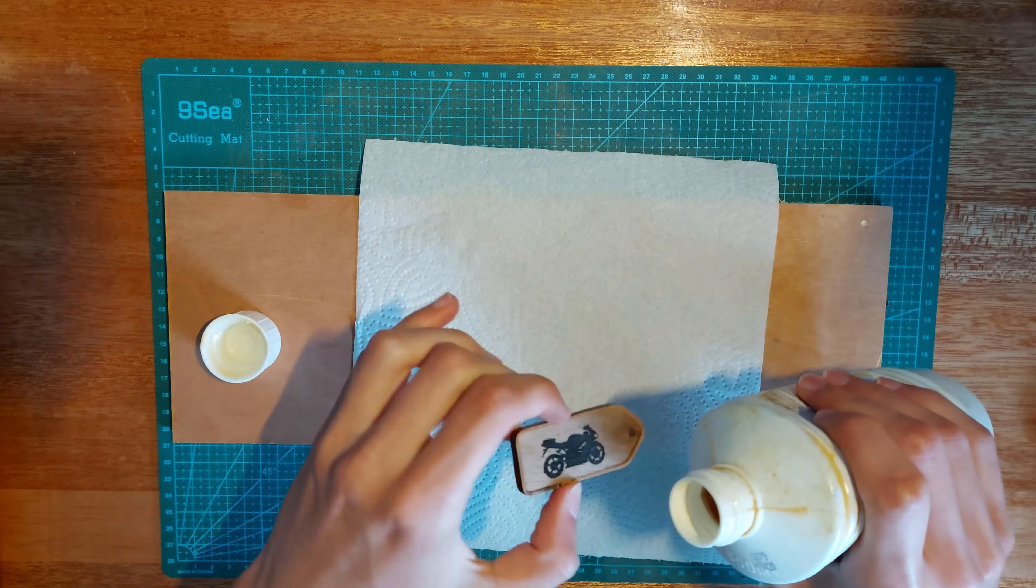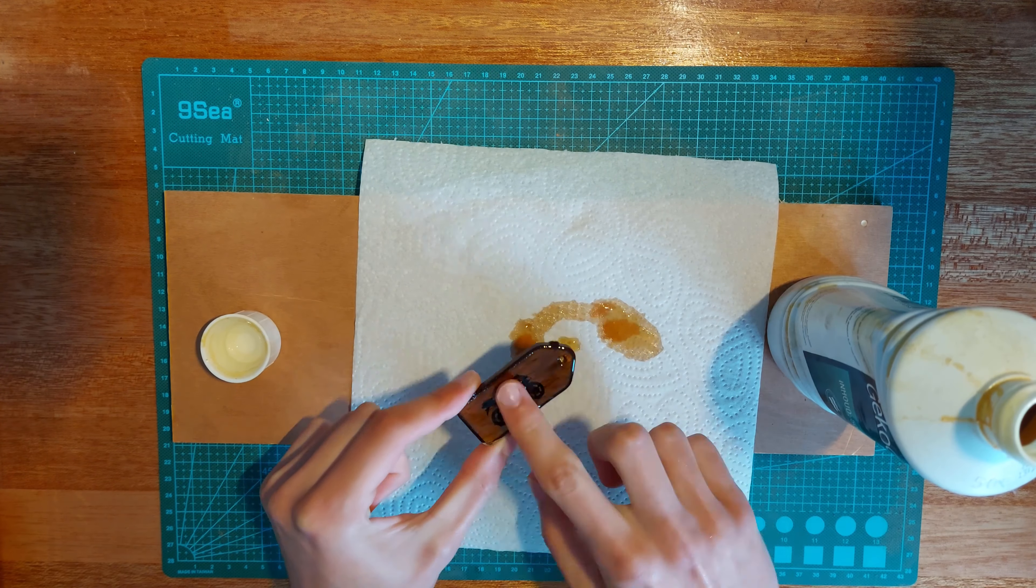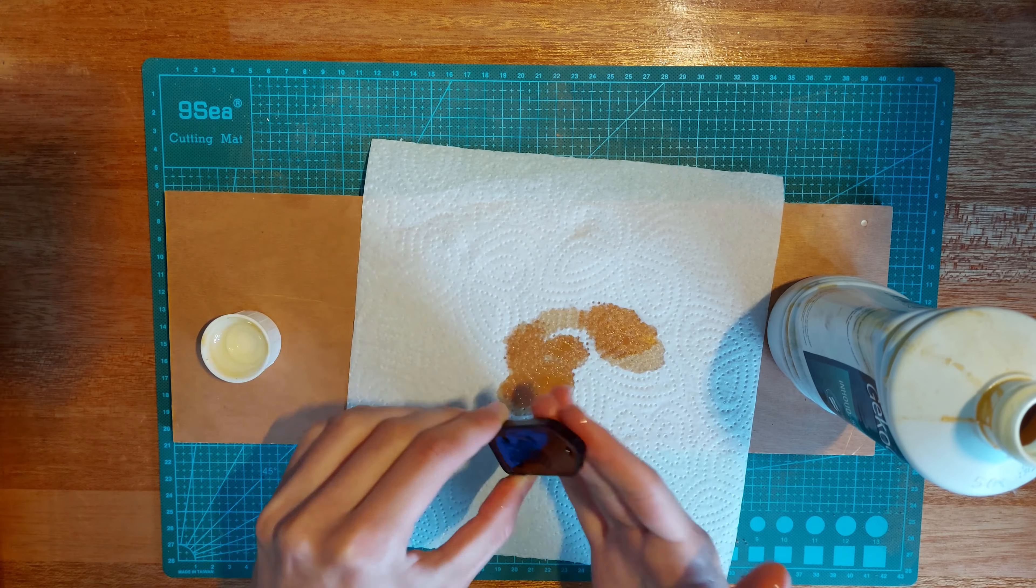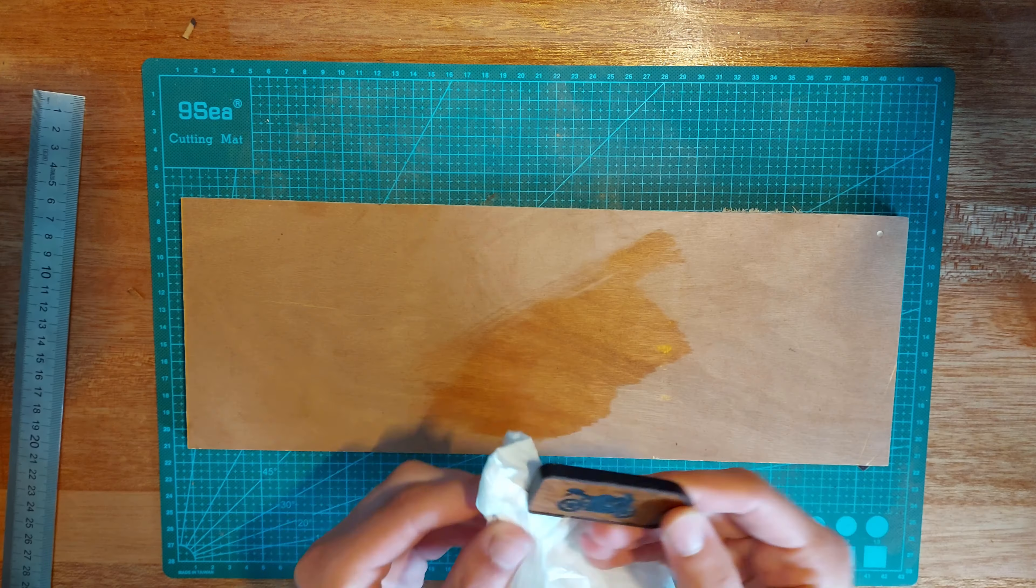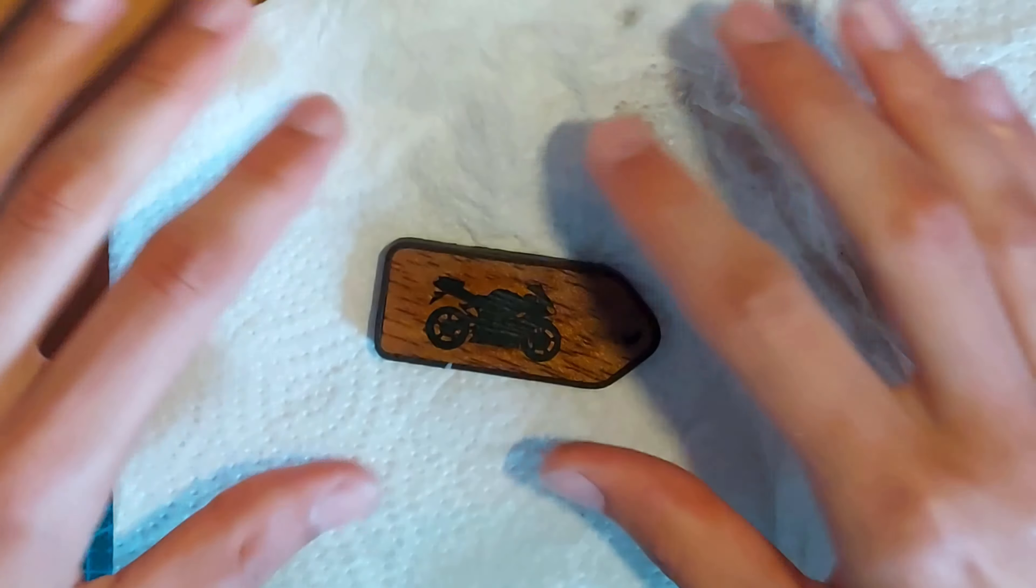I used boiled linseed oil to finish the piece, which gave it a much darker and richer finish. It looks amazing, and I'm very excited to use this wood on my future knives.